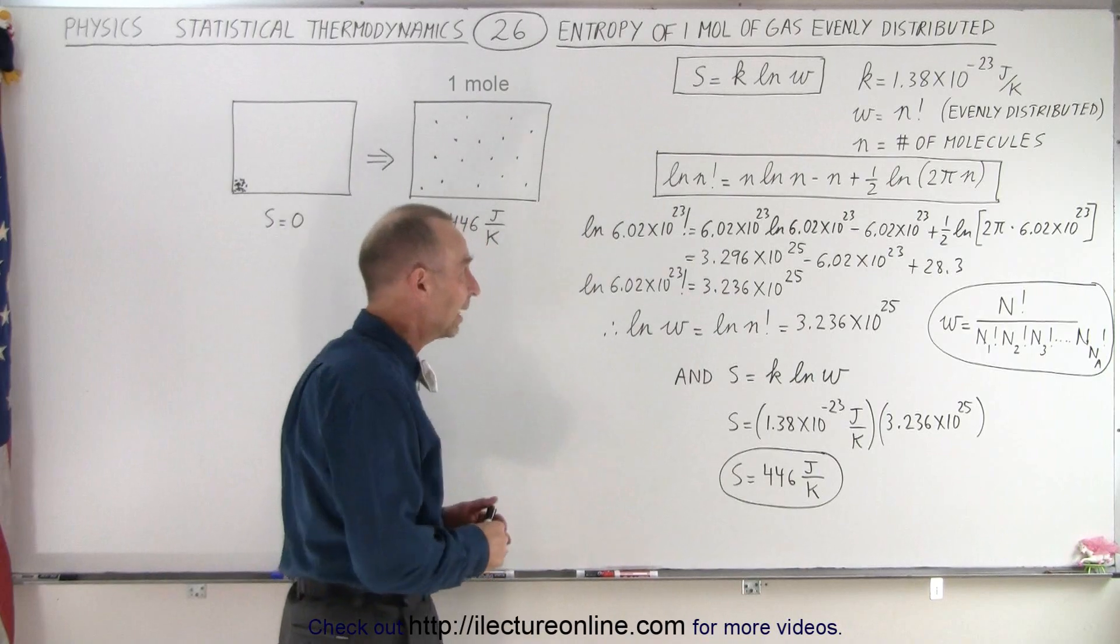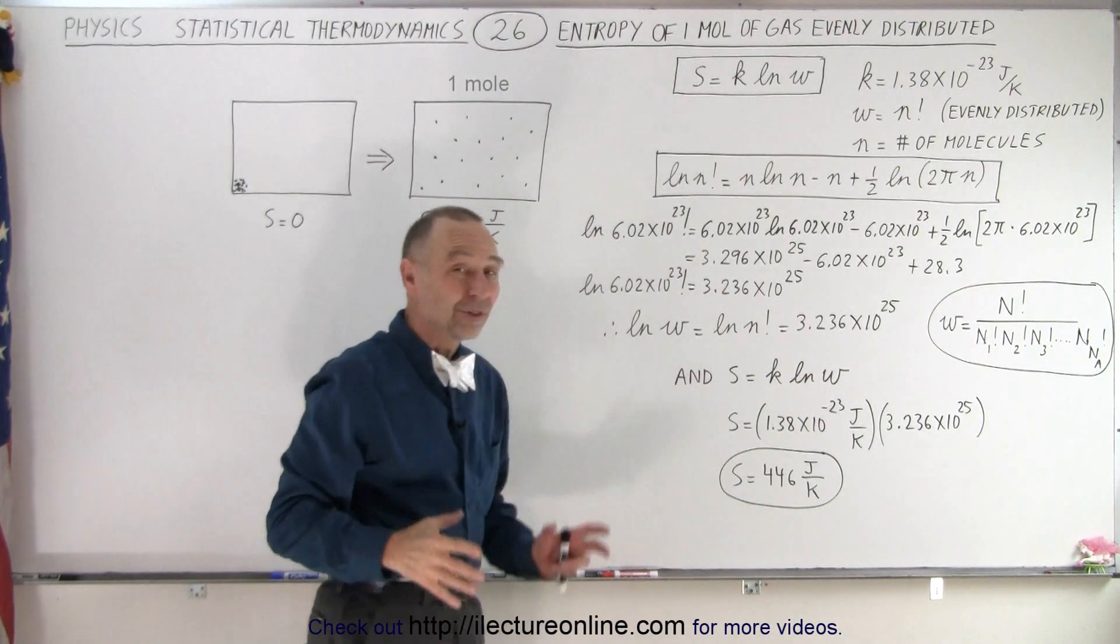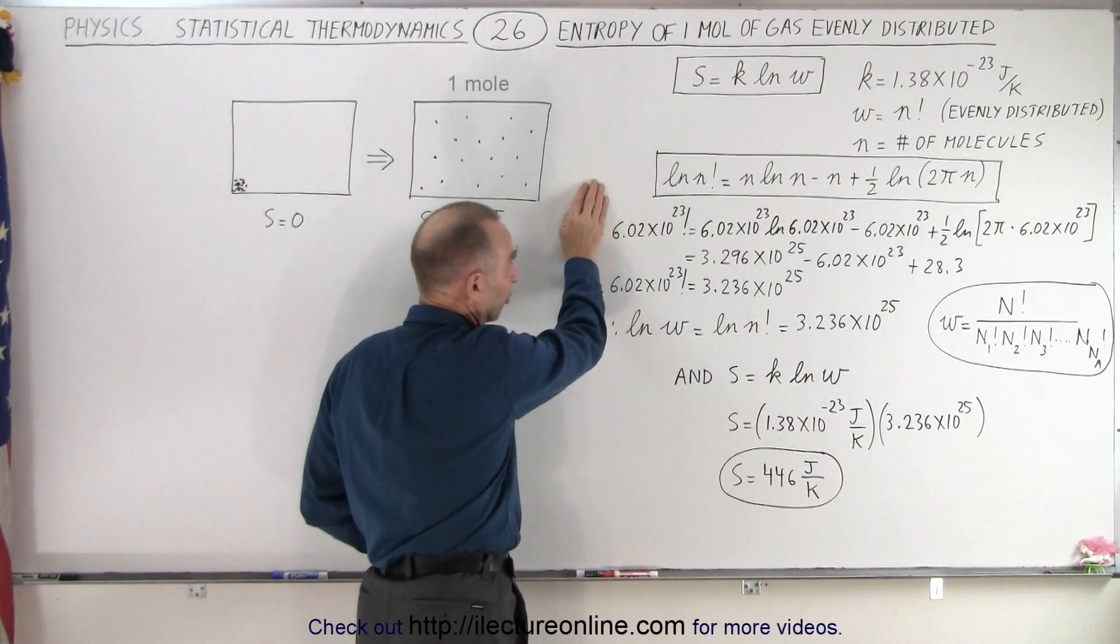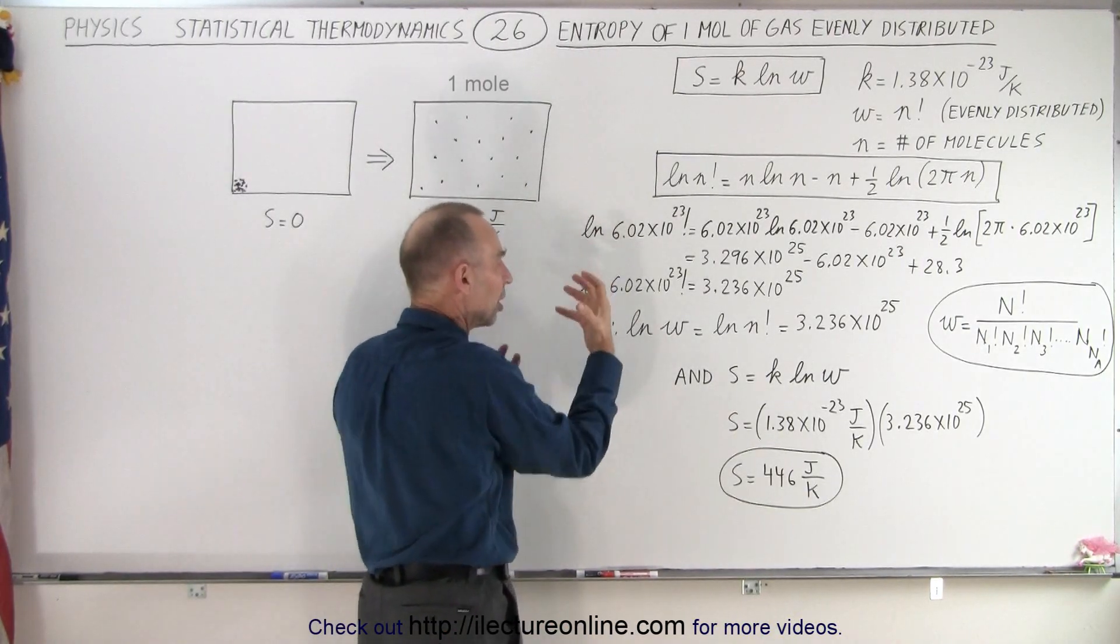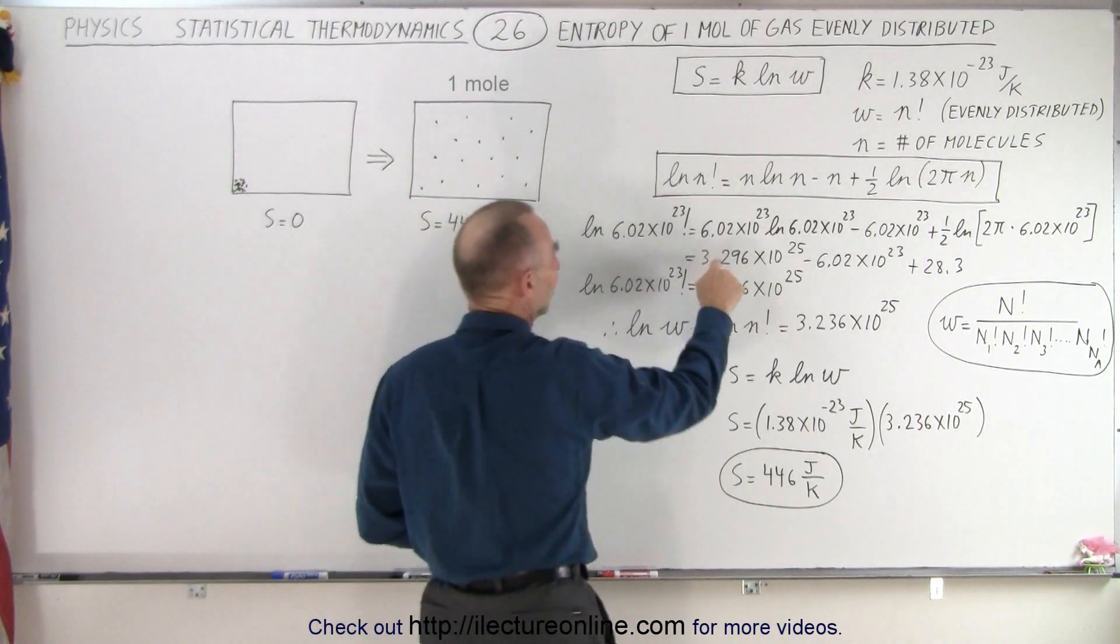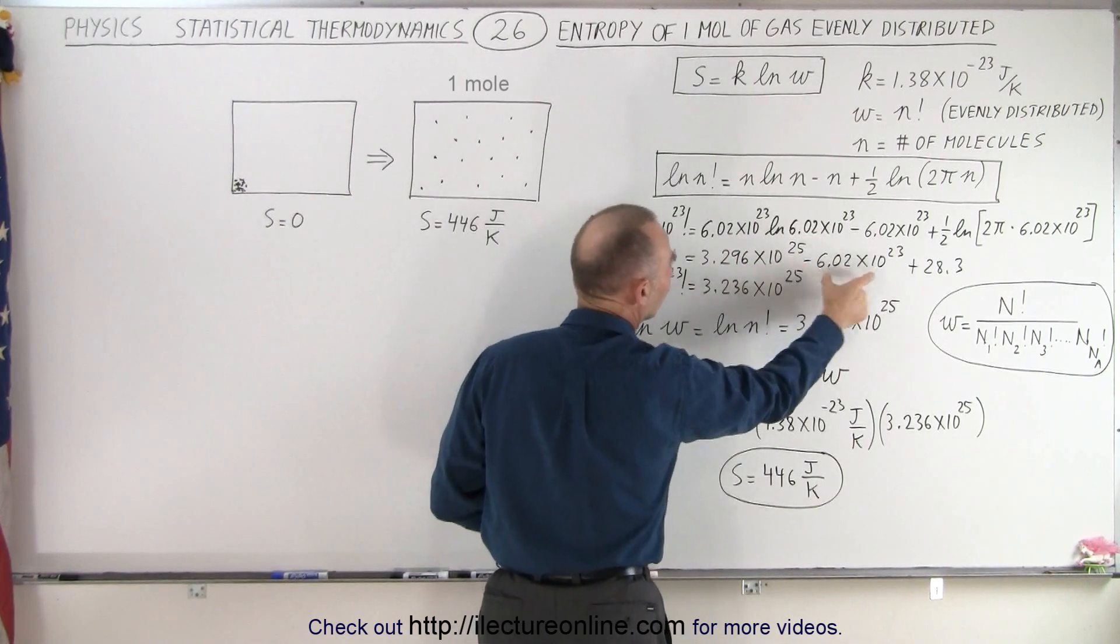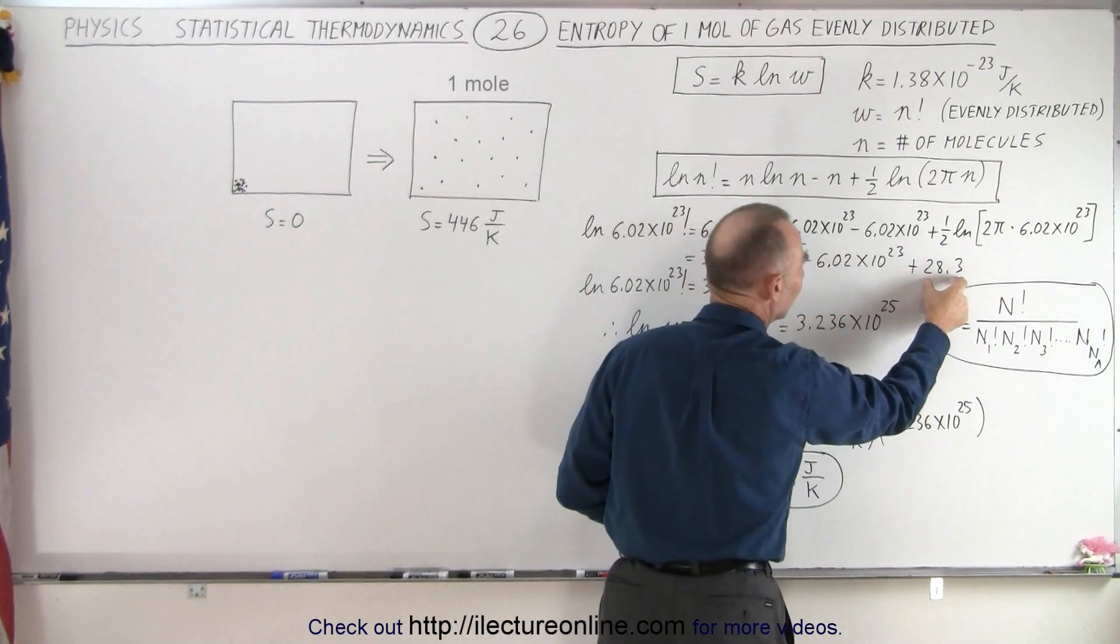Then of course we grab a calculator and now it's doable. There's no way you'll ever be able to figure out what this number is equal to when we don't take the natural log of that. But once we take the natural log, the number is proportionally a lot smaller. And so here we can see that Avogadro's number times the natural log of Avogadro's number is equal to this minus Avogadro's number plus this.